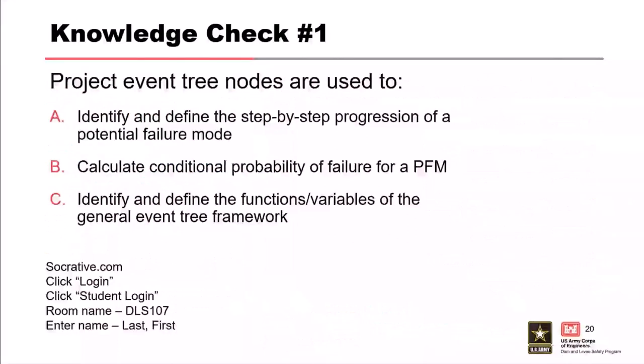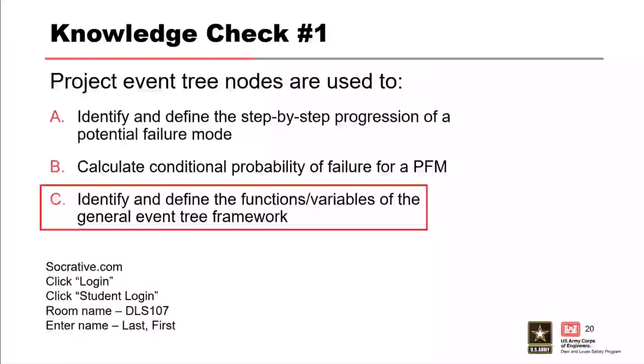Knowledge check question: Project event tree nodes are used to: A) identify and define the step-by-step progression of a potential failure mode, B) calculate conditional probability of failure for a PFM, or C) identify and define the functions or variables of the general event tree framework. The correct answer is C—identifying and defining the functions or variables of the general event tree framework is the purpose of project event tree nodes.